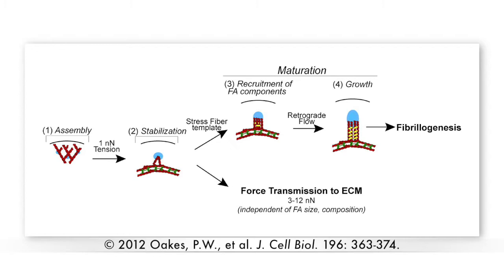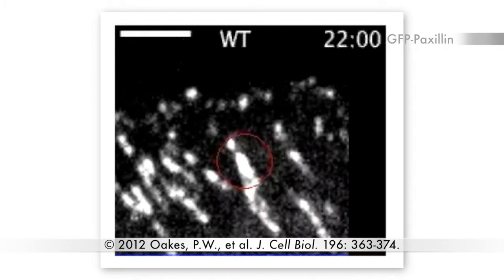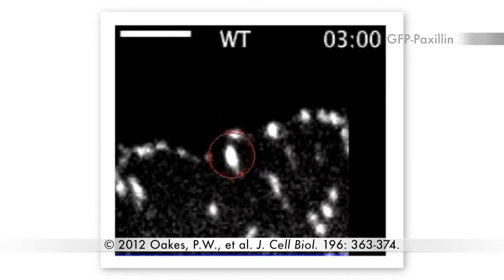The actin cytoskeleton and its regulators play key roles in the maturation and stabilization of the focal adhesions that attach cells to the extracellular matrix. However, as Margaret Gardel from the University of Chicago explains, how focal adhesion maturation affects tissue morphogenesis is still largely unknown.